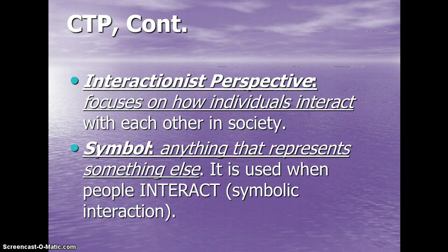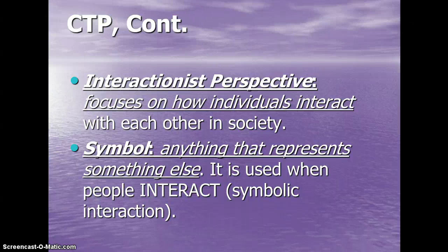Our last current theoretical perspective is the interactionist perspective. That focuses on how individuals interact with each other in society. How do people interact with each other? They use symbols. A symbol is anything that represents something else — it is used when people interact. That's why we call it symbolic interaction in your textbook and in class. A hand gesture, a nod of the head, any word coming out of a person's mouth symbolizes some object, some piece of society, some idea. The words that come out of our mouths aren't those objects themselves — they're just a description of those objects or ideas. This looks at how people use those symbols to get their thoughts and point across to other people.